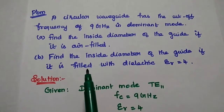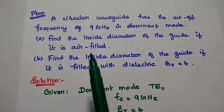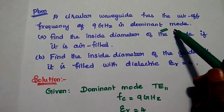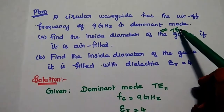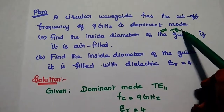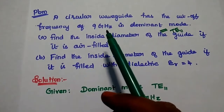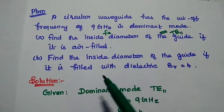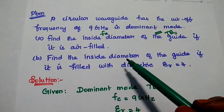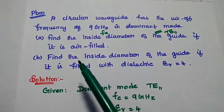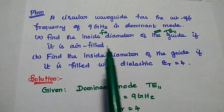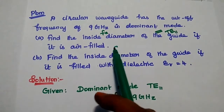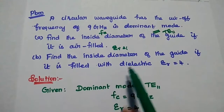In this problem, the dominant mode of the circular waveguide is TE11 mode. The cutoff frequency fc is given. Air filled means εr = 1. In the solution part, first we write the given data: dominant mode is TE11 mode, cutoff frequency fc = 9 GHz, εr = 4 for dielectric case. For air filled, εr = 1 and μr = 1.